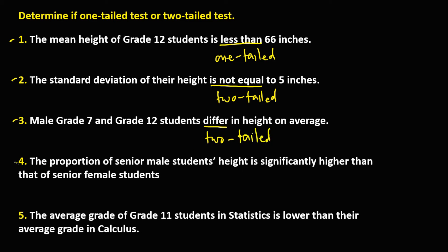For number four, we have 'higher than,' so with direction — this is a one-tailed test. And for number five, we have 'lower than,' so this is also a one-tailed test.